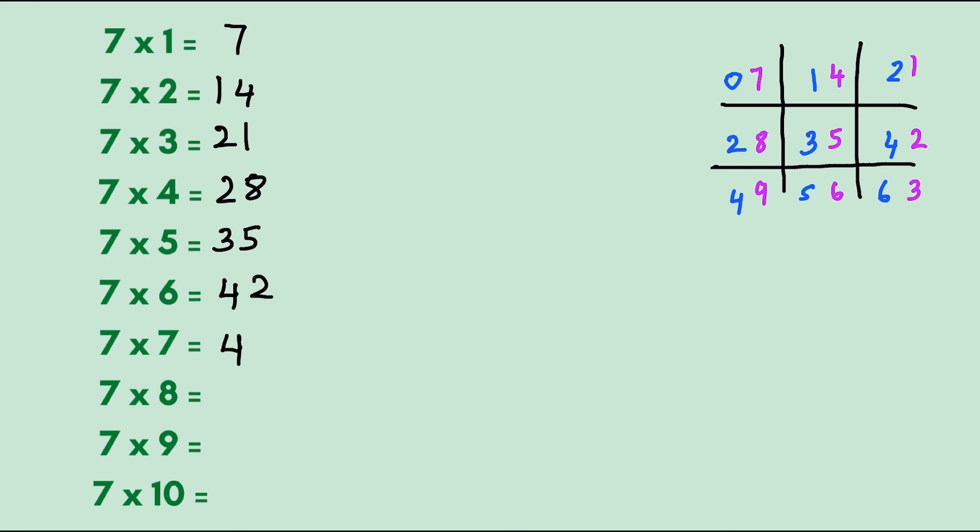Seven times eight is fifty-six, seven times nine is sixty-three. And what about seven times ten? We know that any number multiplied by ten, write the number and add a zero to it, so seven times ten is seventy.